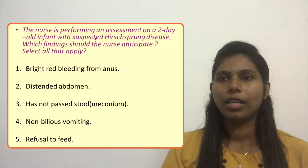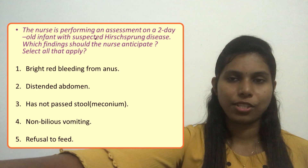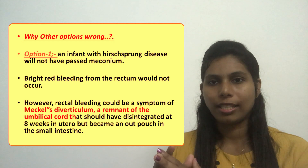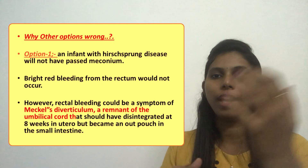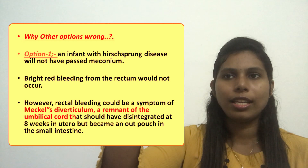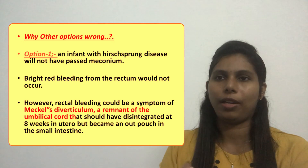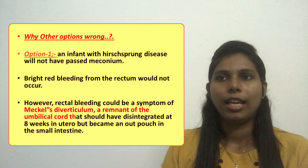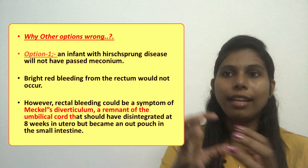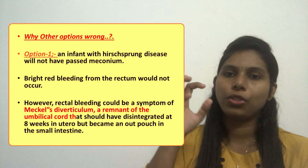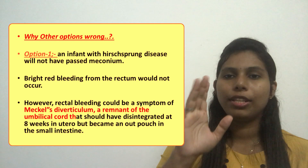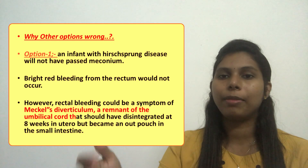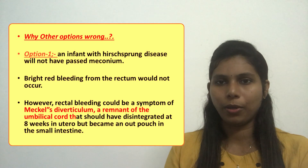Option one says bright red bleeding from the anus — that is not an anticipated finding. The anal sphincter cannot relax and there is no peristaltic movement, so bright red rectal bleeding would not occur. This finding is instead associated with Meckel's diverticulum, a remnant of the umbilical cord that should have disintegrated at eight weeks in utero but became an outpouching in the small intestine. So option one is wrong.